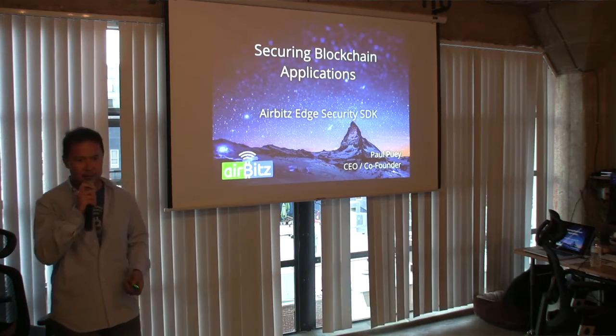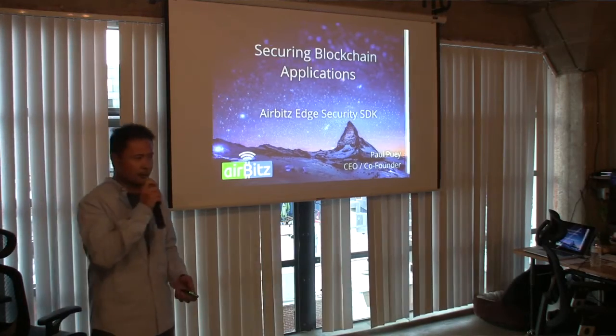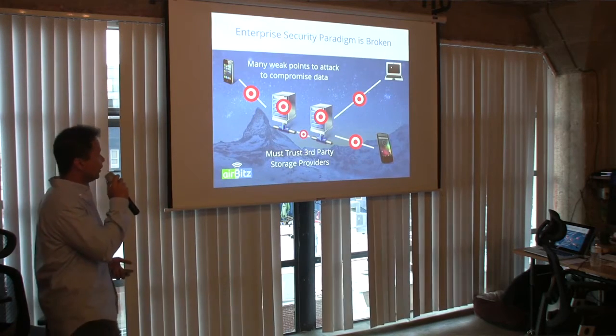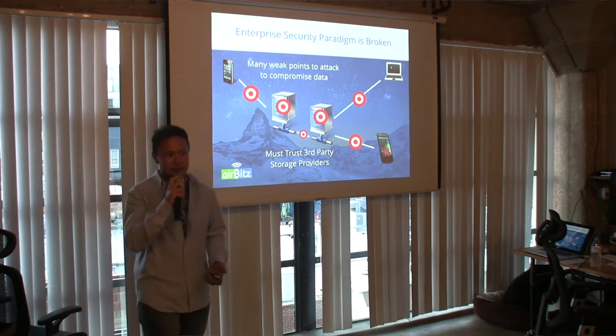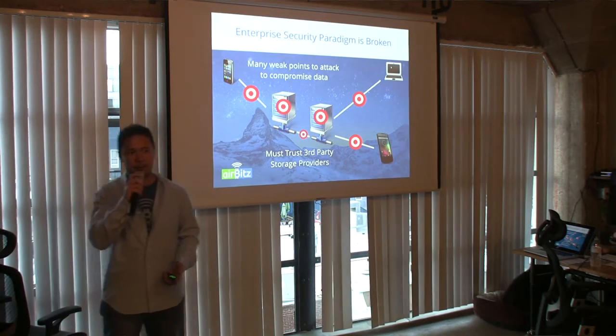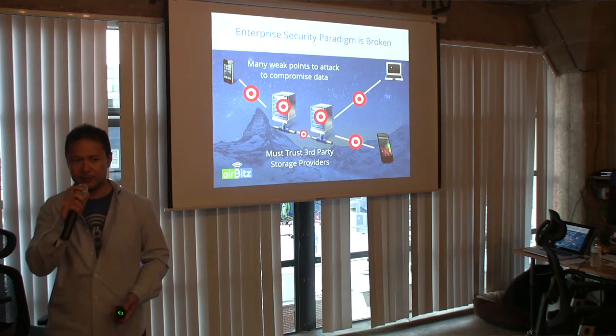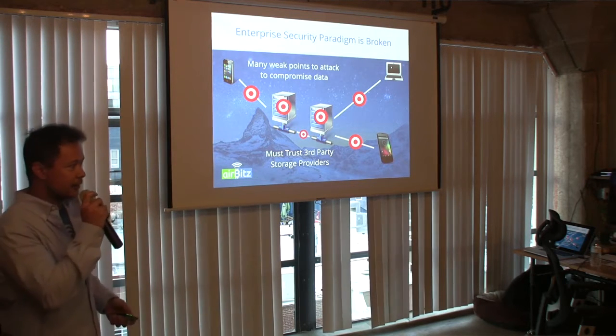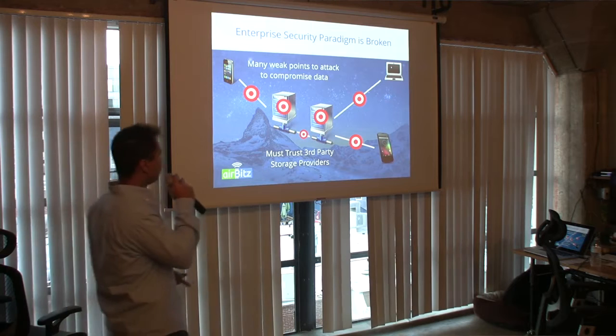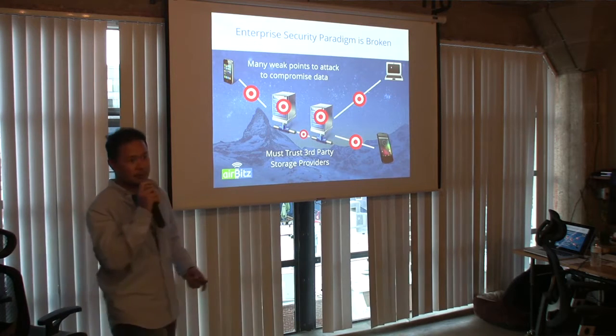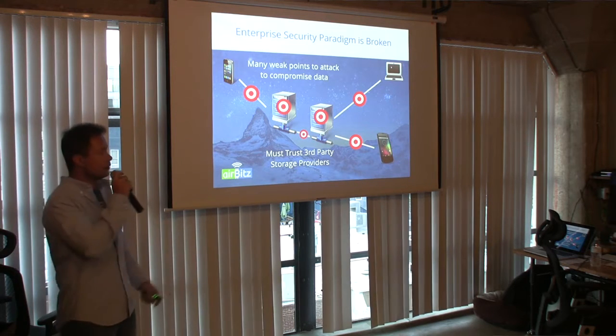What we have is what we call an edge security SDK. Edge security means that we secure data at the edges versus on centralized servers. So let's take a look, since this is a talk about security, at what we do today. The model of security today is very enterprise driven, meaning that we take valuable information and we stick it on central servers, which have many weak points of attack.